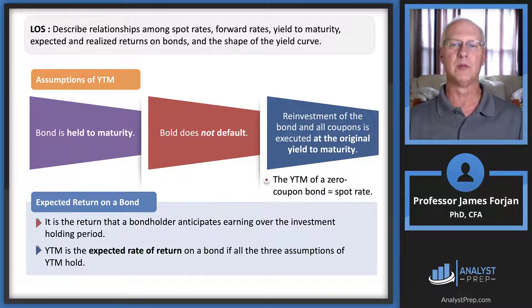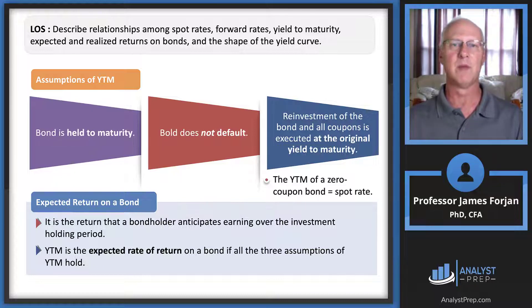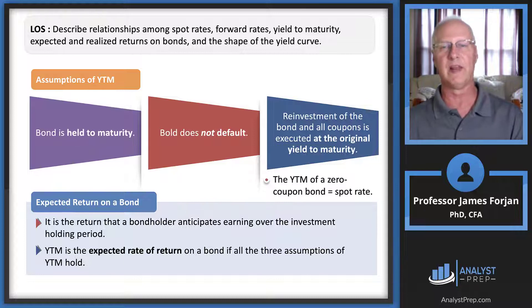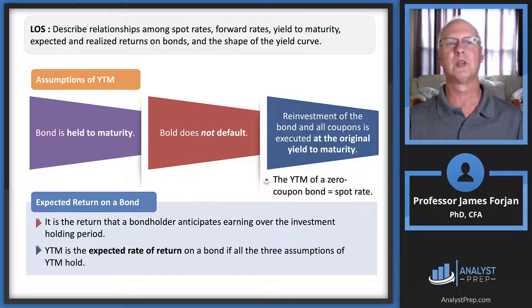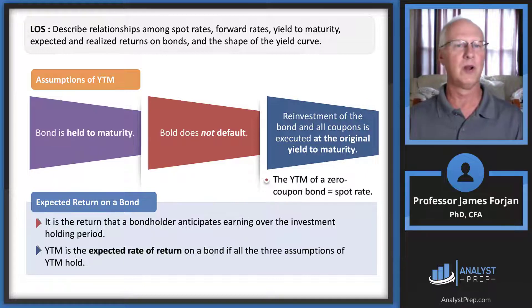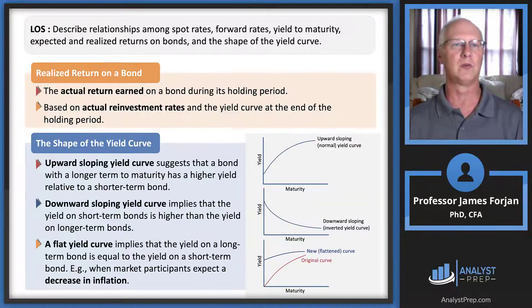Yield to maturity is always the first interest rate someone mentions on a bond because it reflects current market conditions. Hopefully it reflects credit risk, liquidity risk, interest rate risk, third-party risk, and any other risks to which bondholders are exposed.